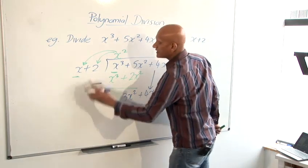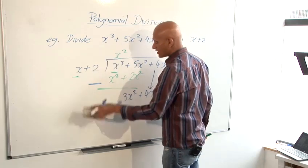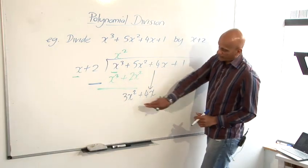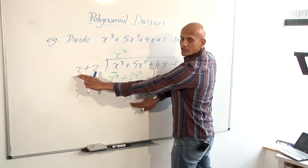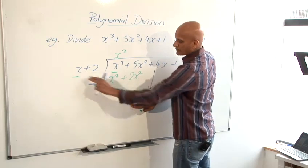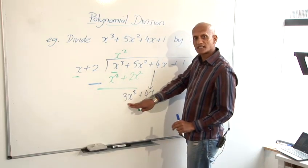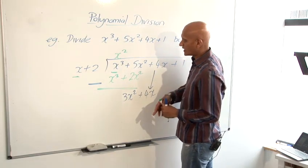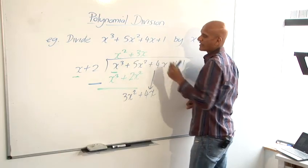And then again, do exactly the same thing. So the procedure repeats itself now. Look at the first one of these and the first one of those. What do I have to multiply x by to get 3x squared? So the answer of course would be 3x. So I write plus 3x on there.